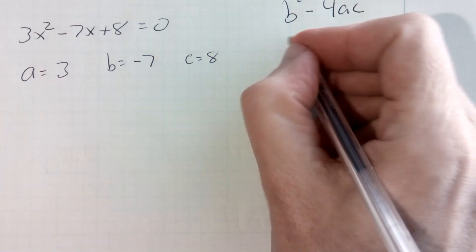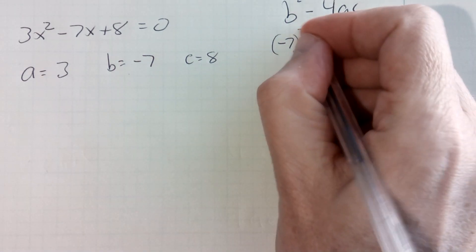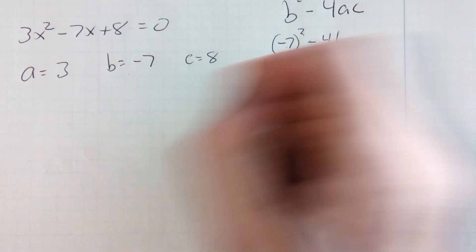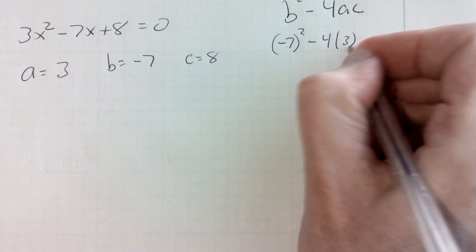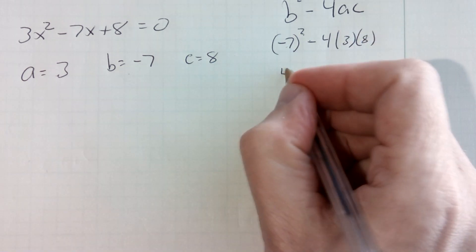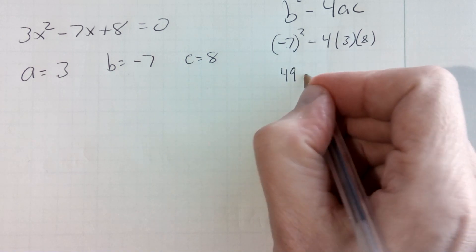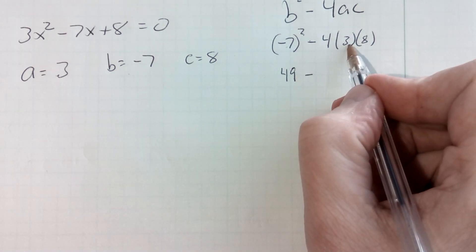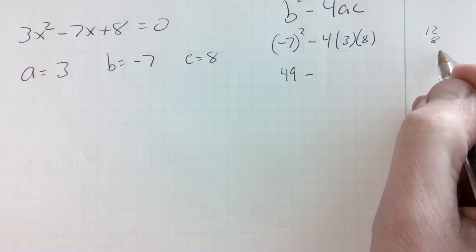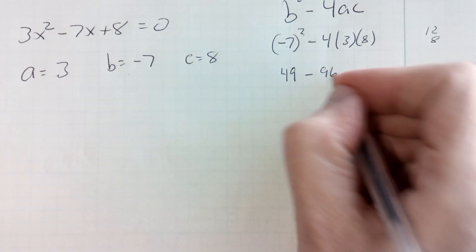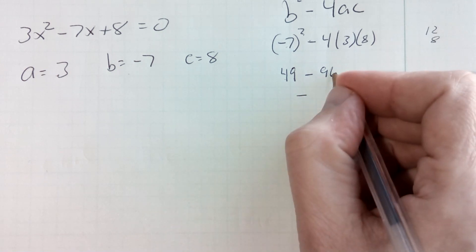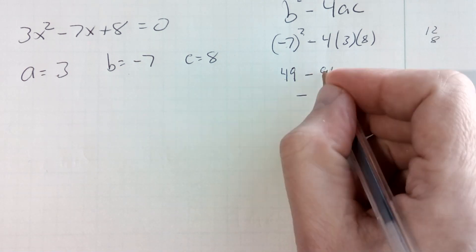b is negative 7. Now, be careful here. I'm squaring a negative. It's going to become positive. Minus 4 times a, which is 3, times c, which is 8. And so I get 49, which is positive, minus 4 times 3 is 12. 12 times 8 is 96. 49 minus 96 will be negative 47.